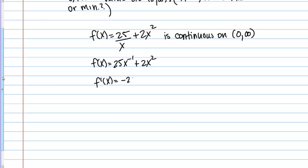So that's going to give me -25x⁻² + 4x. And then I can write that as -25/x² + 4x. So that's my derivative. And we want to see if this has any local maximum or minimums. So how do I do that? First I need to find the critical points. Remember the critical points are places where the derivative equals 0 or does not exist.